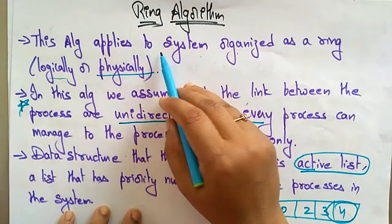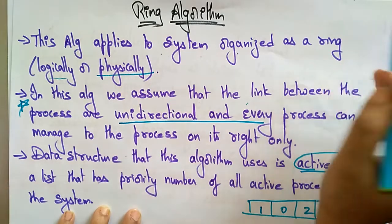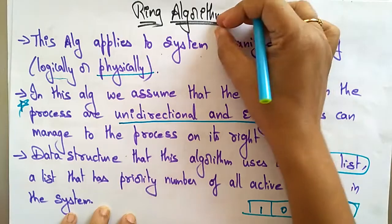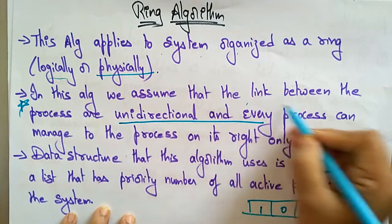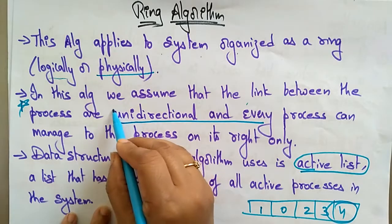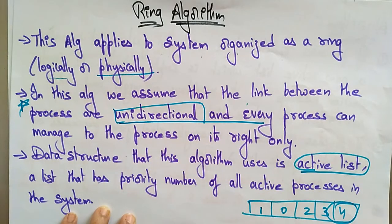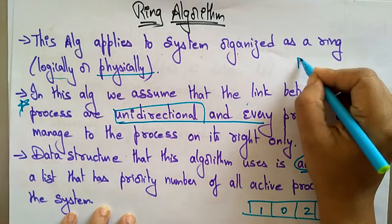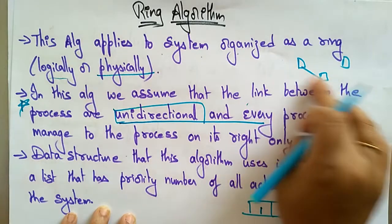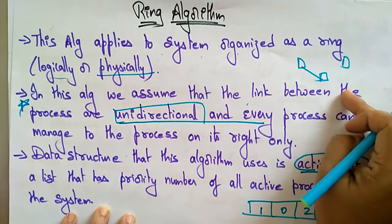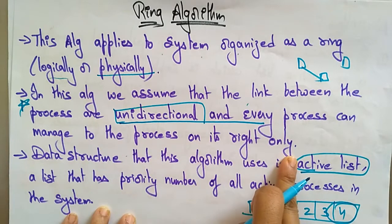This algorithm applies to systems organized as a ring, either logically or physically. The main concept of this ring algorithm is that the links between the processes are unidirectional. So the link that exists between the processors — whatever processors are participating in the network — these process links are unidirectional, and every process can communicate to the process to its right only.